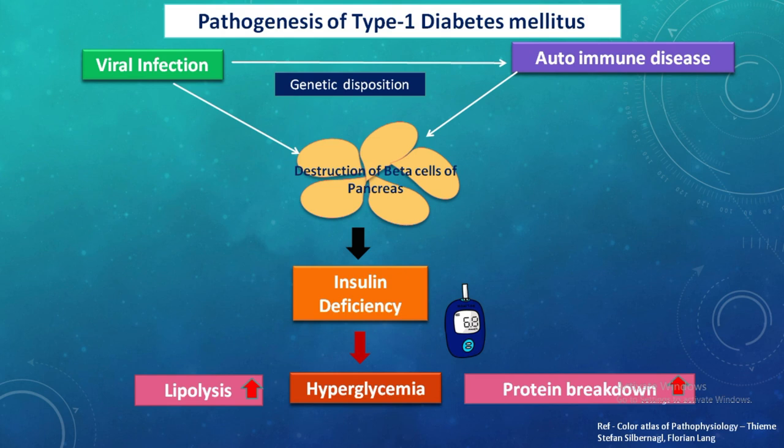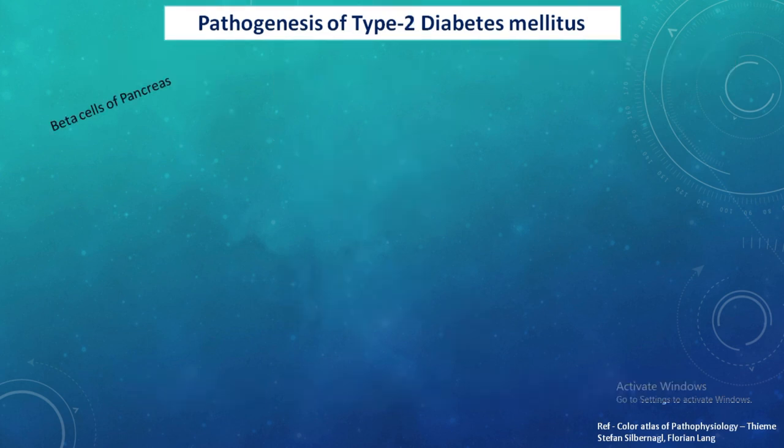As a result of insulin deficiency, there is hyperglycemia, a rise in blood glucose level, increased lipolysis, and a rise in protein breakdown. This is the overall pathogenesis of type 1 diabetes mellitus.